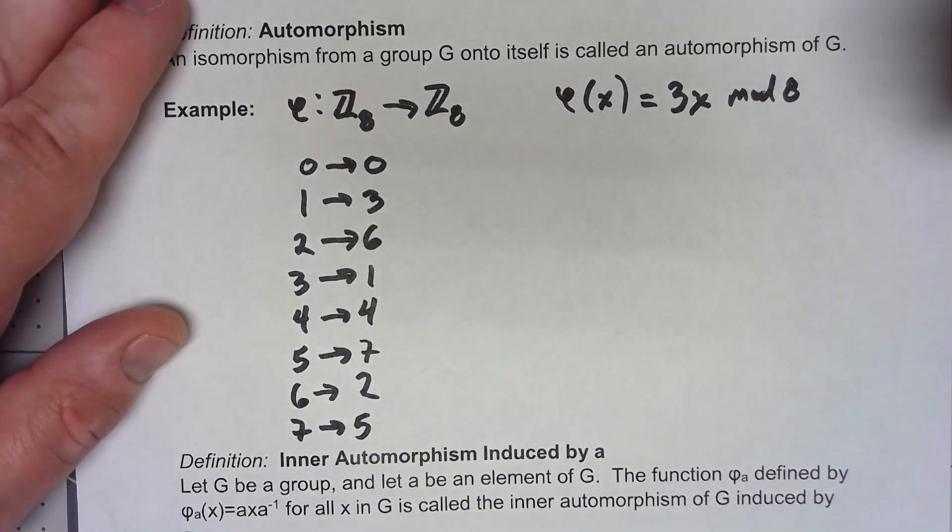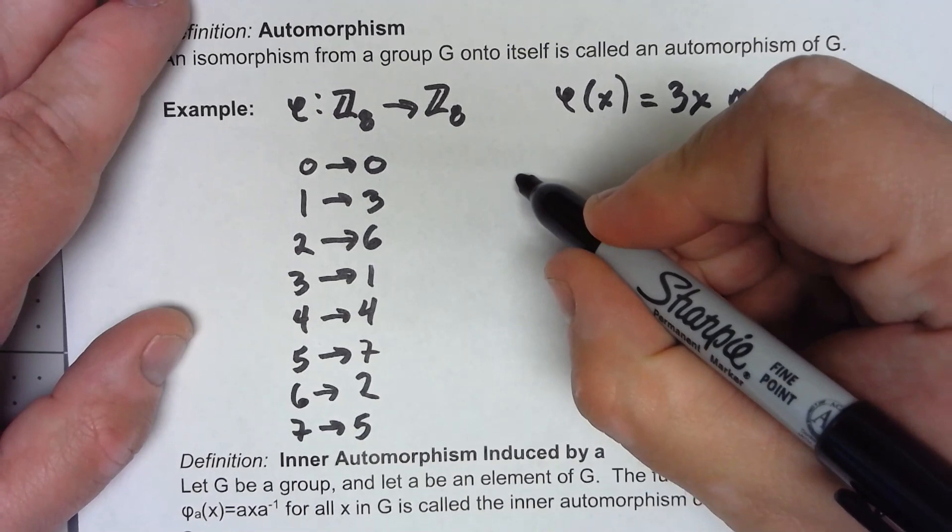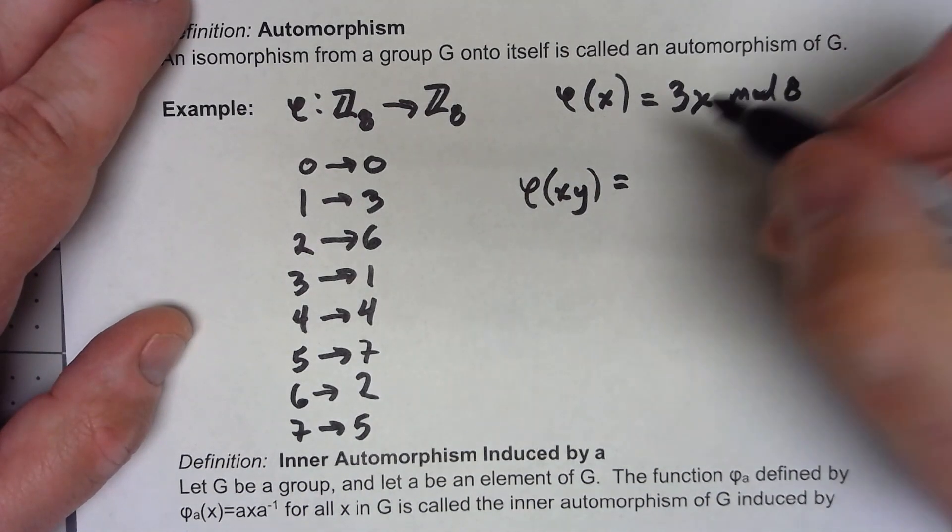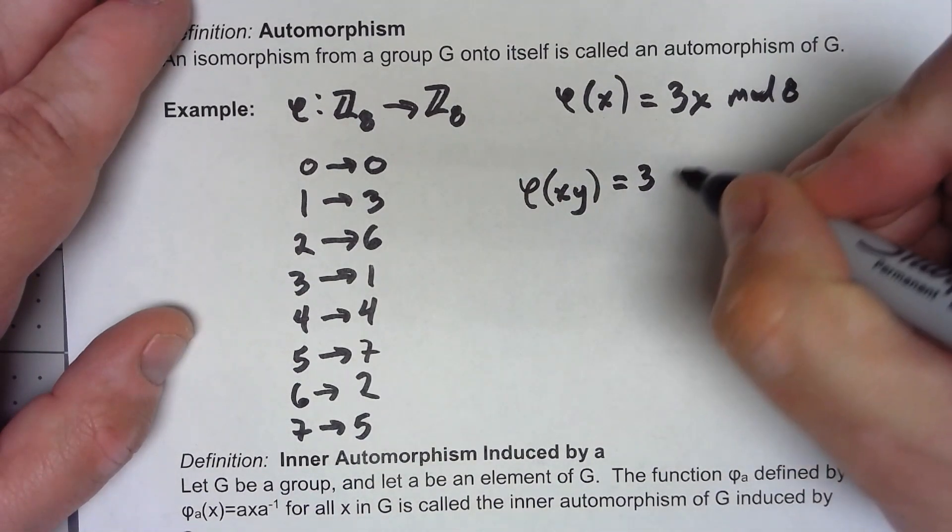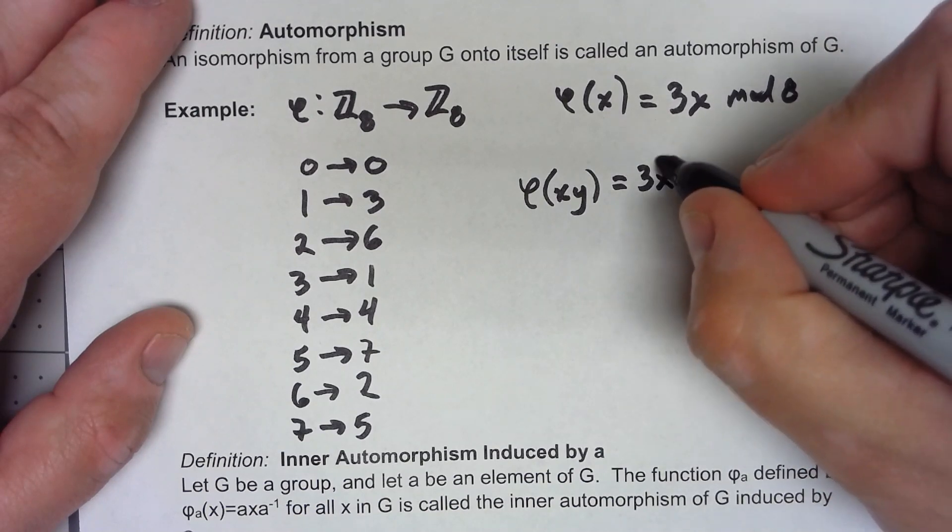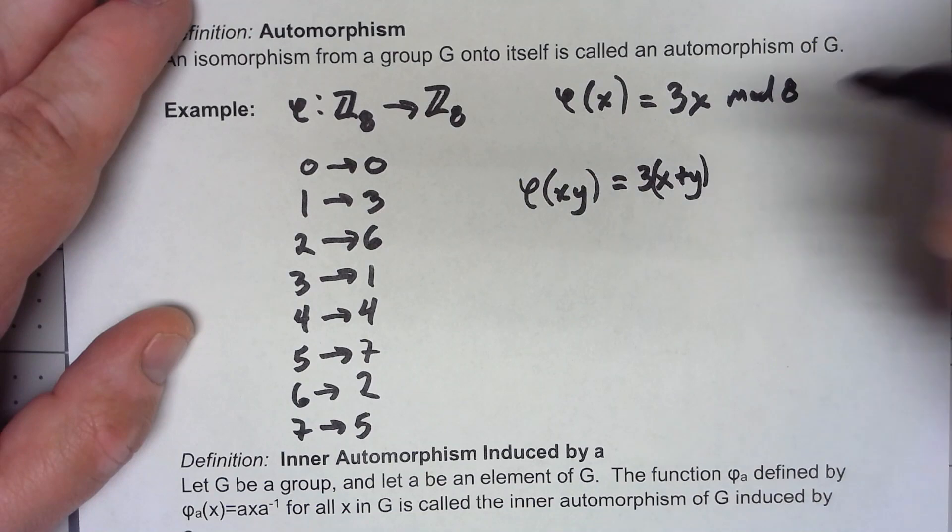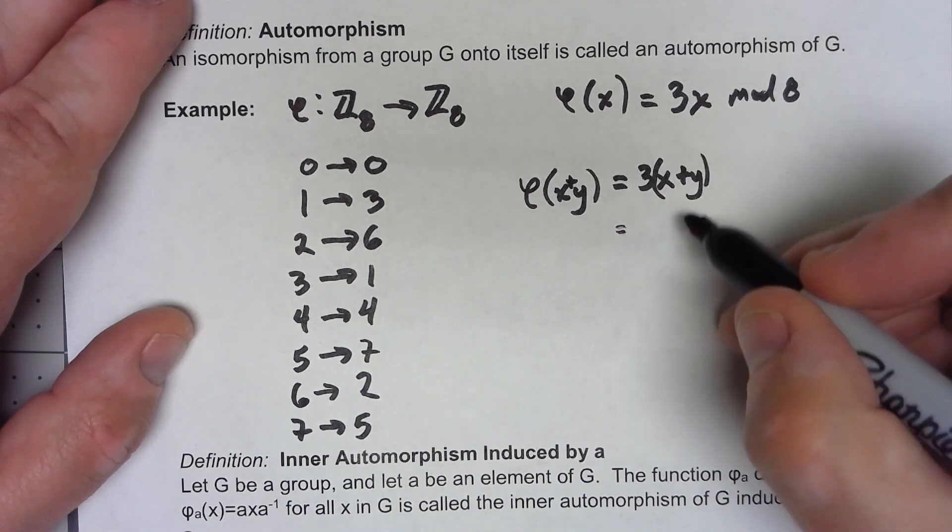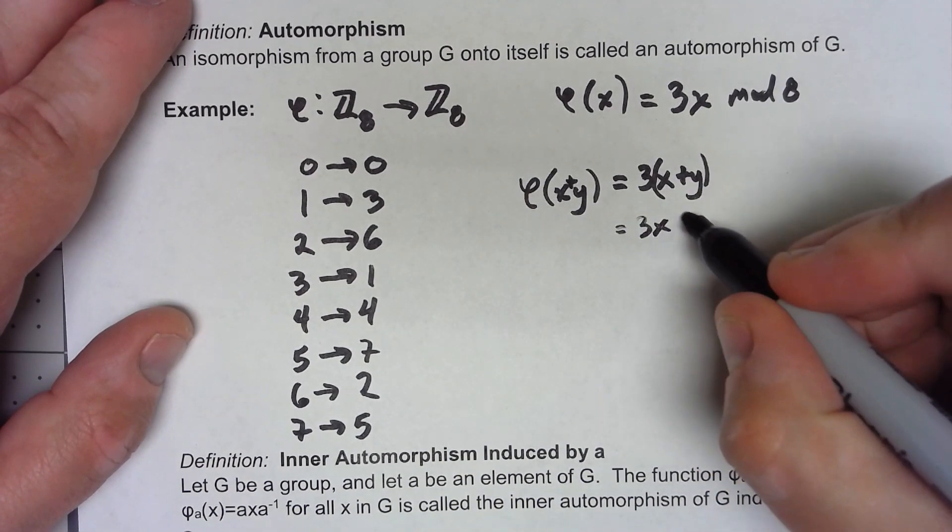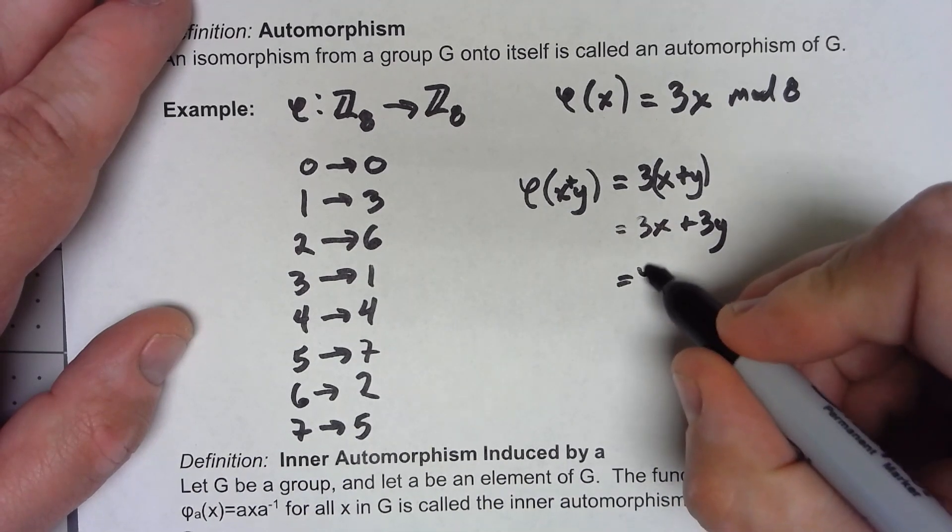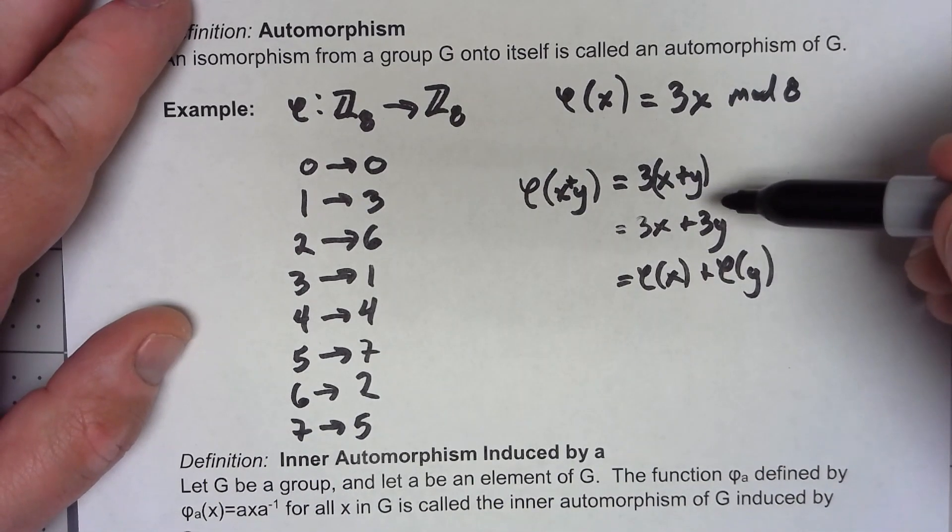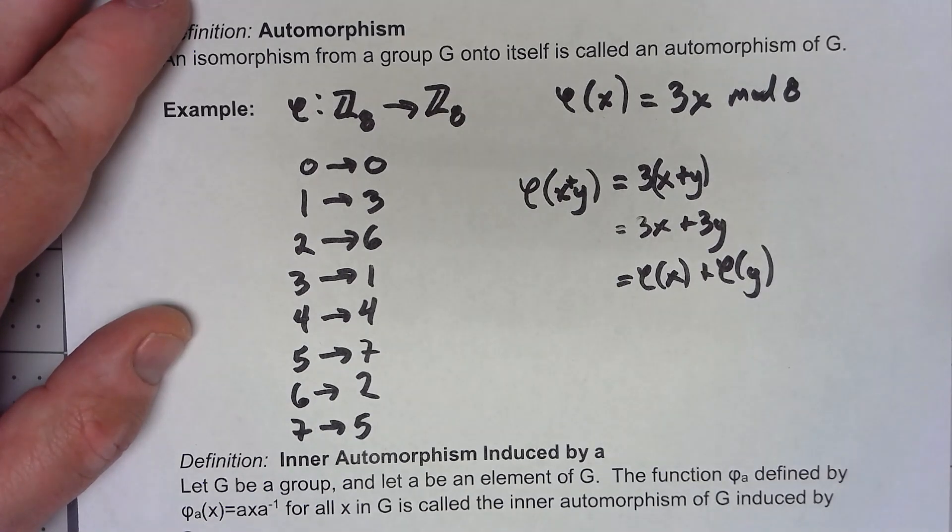The homomorphism property is very similar to almost everything we've done this week. So if I have phi of xy, that's equal to 3 times x, I'm actually going to write it plus y because remember that my group operation is addition. So that's going to be the same thing as 3x plus 3y, which is phi of x plus phi of y. Now of course, all these additions and multiplications are all mod 8, but that doesn't change anything that I just did. So there we go, that is an automorphism.